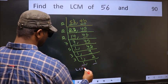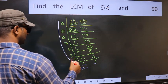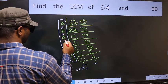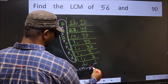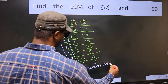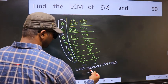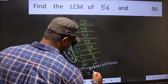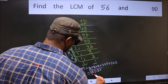So our LCM is the product of these numbers. That is 2 into 2 into 2 into 2, into 7, into 5, into 3, into 3. When we multiply these numbers, we get 2520 as our LCM.